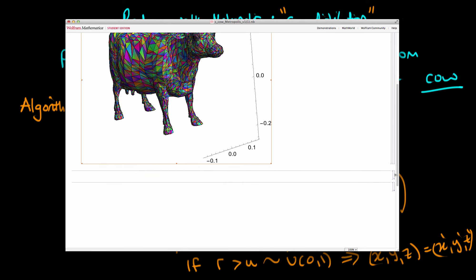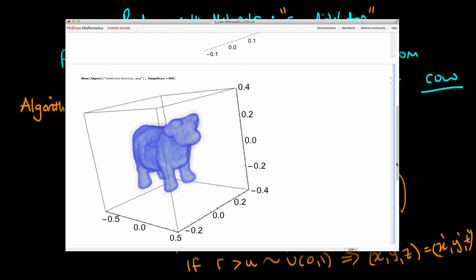So what you can do is actually visualize our distribution for the cow. And you see that it's got its highest value near the surface of the cow.